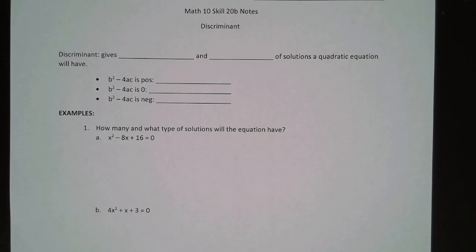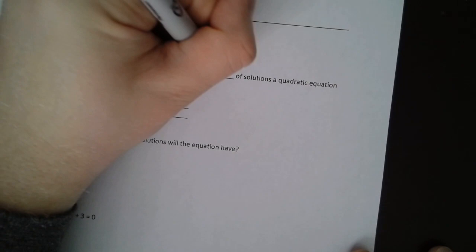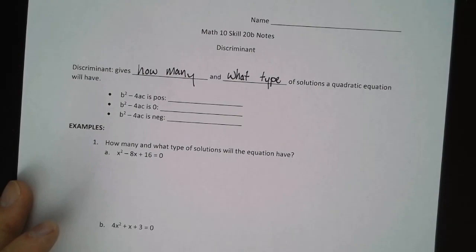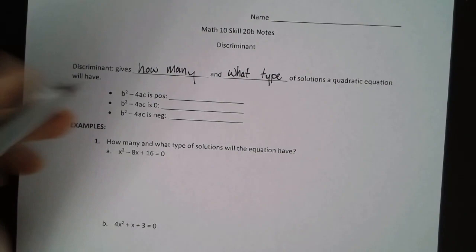So today we are going to be talking about discriminant. The discriminant is the part of the quadratic formula underneath the square root. The discriminant gives how many and what type of solution a quadratic equation will have. This b squared minus 4 times a times c, that's the part underneath the quadratic formula. This is the discriminant.